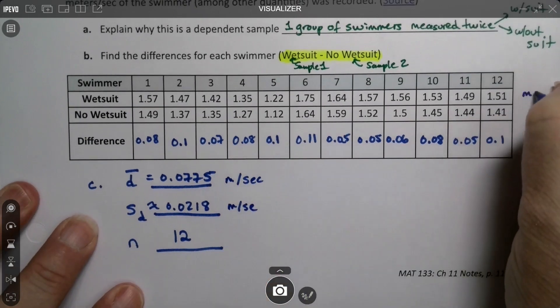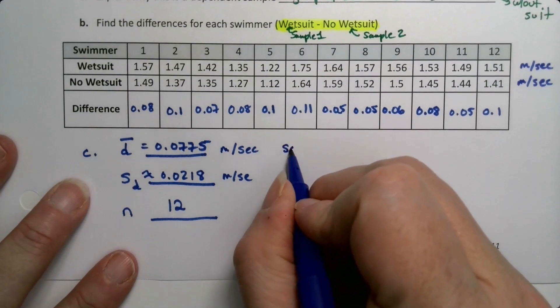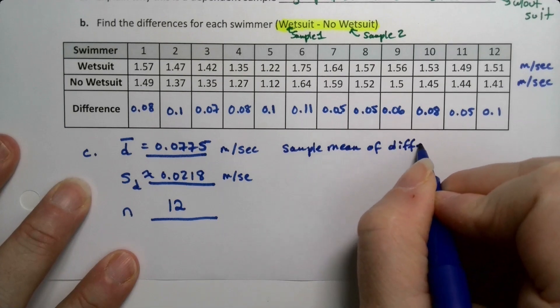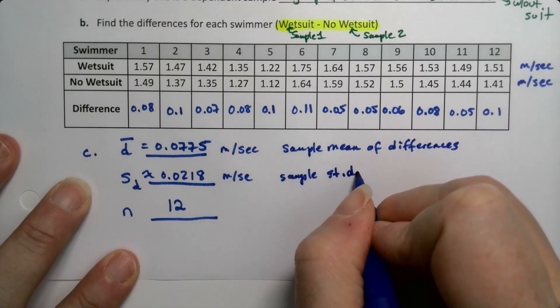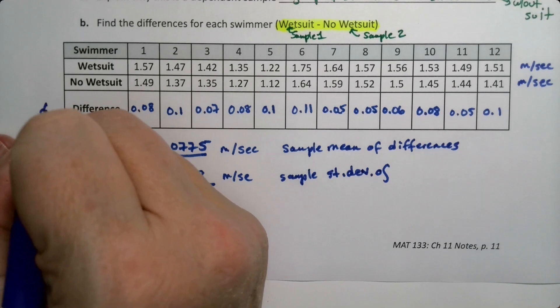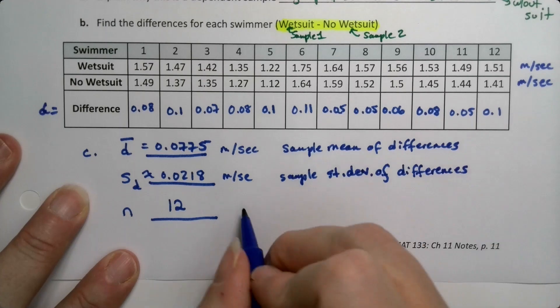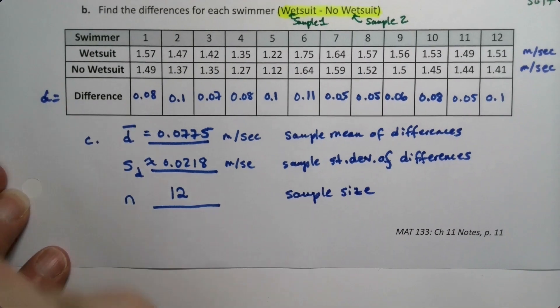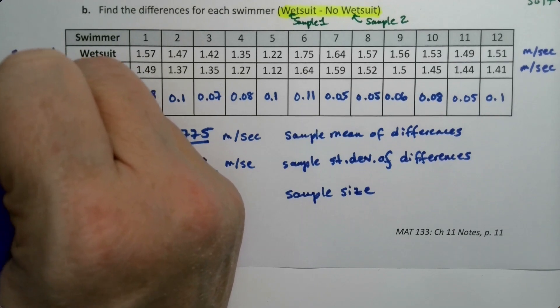These are both meters per second because that's what these are. This one is the sample mean of the differences, this one's the sample standard deviation of the differences, of the D's, because that's what these are. And this is the sample size. This was sample one, this was sample two based on what was written above.